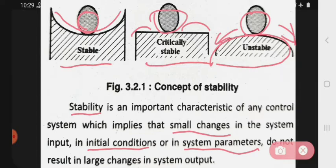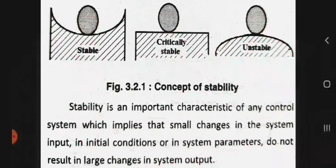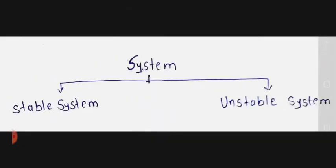Concept of stability mein kya hota hai: jo bhi apna input hai, agar input system mein small change ho gaya hai, toh aapke jo output system hai, uske jo parameter se ya phir initial condition hai, usmein zahada change nahin hota hai. This is the concept of stability. See the next — that is the types of system.